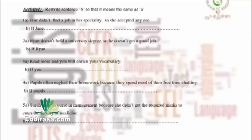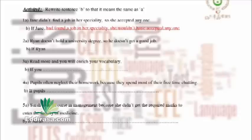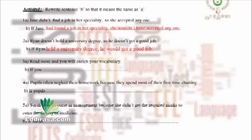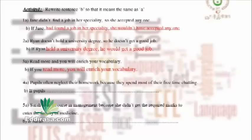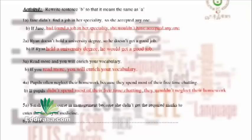Let's correct sentence by sentence. Sentence one: if Jane had found a job in her specialty, she wouldn't have accepted any job — type three, past situation. Sentence two: if Ryan held a university degree, he would get a good job — type two, present situation. Sentence three: if you read more, you will enrich your vocabulary — type one. Sentence four: if pupils didn't spend most of their time chatting, they wouldn't neglect their homework — type two, verb in the past simple but negative.